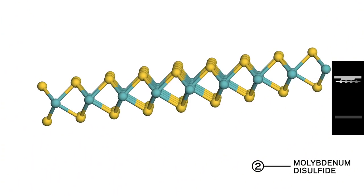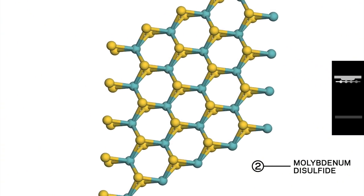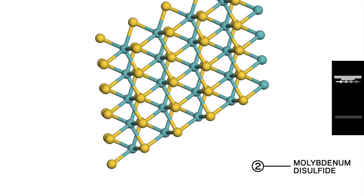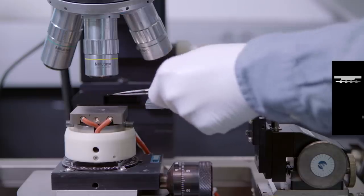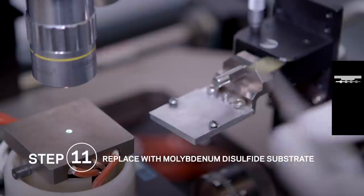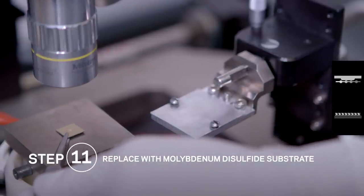The next layer we want to pick up is molybdenum sulfide. Molybdenum sulfide is a semiconductor which allows it to be used to make electronic devices. So we'll swap out this chip with hexagonal boron nitride flakes for a chip that has molybdenum sulfide flakes on top of it.